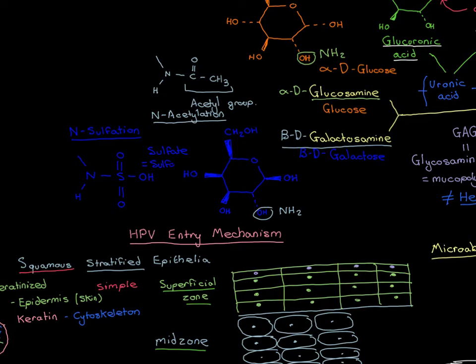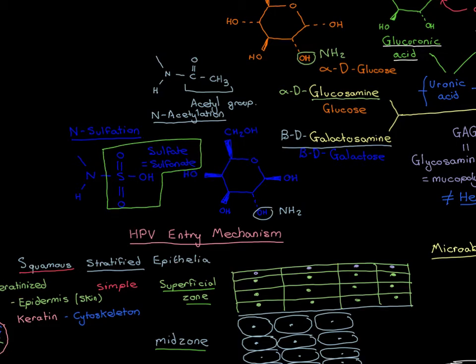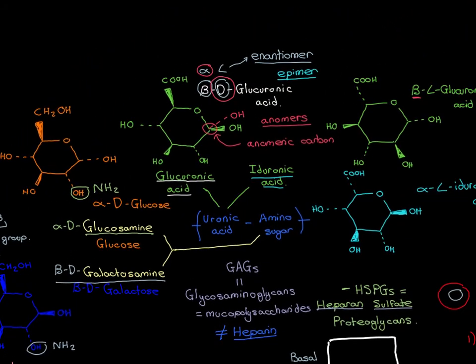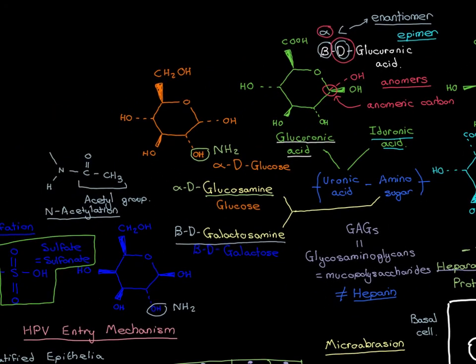On the amino sugars, apart from acetylation, you can also get N-sulfation. Sulfation can also occur onto alcohol groups, which is interesting because it doesn't just involve amino sugars — it can also involve uronic acid sugars. On the second and third alcohol groups of the uronic acid sugars you can get sulfation. On the amino sugars, sulfation can occur on the amino group, on the third carbon's alcohol group, and on the sixth carbon's alcohol group — three places on amino sugars and two on uronic sugars.